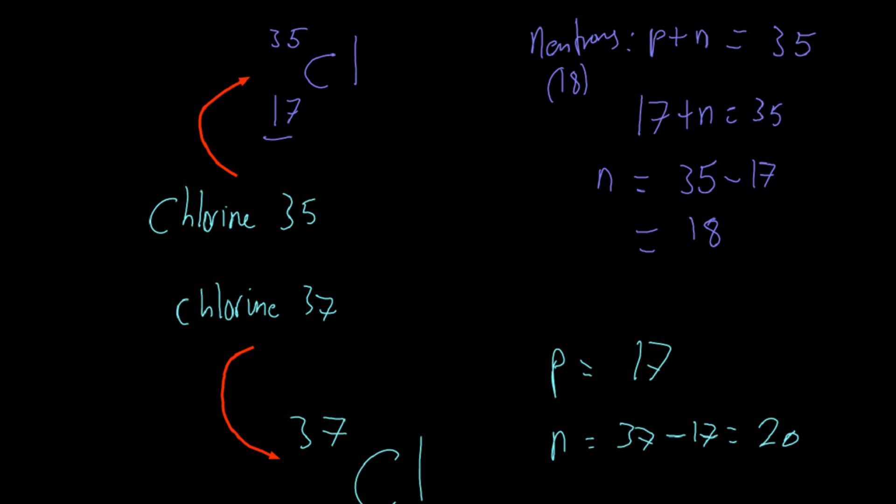Now there's an important term, which you do need to know, and that is that these two atoms, so chlorine 35 and chlorine 37, they are isotopes. And so that is a term which actually means more than one atom of the same element, so here we've got two different atoms of the same element, so they're both chlorine, which have a different number of neutrons, or they have a different mass number. That's the same thing, because their proton number is going to be the same. So two atoms of the same element with a different mass number is going to be your definition of an isotope, or a pair of isotopes.